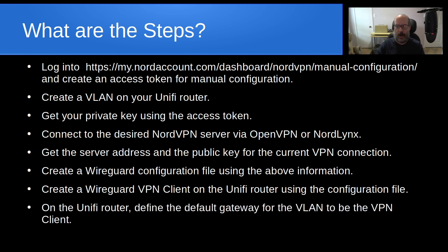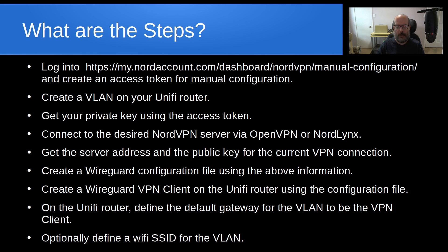We're going to create a WireGuard VPN client on the UniFi router using that configuration file, and define the default gateway for the VLAN to be that VPN client. Optionally, we'll define a Wi-Fi SSID for the VLAN. The reason for that is things like set-top boxes — Fire TV sticks or Rokus — where maybe you don't want to run a VPN client on the device itself, but you want to geolocate it to another part of the world to watch content from there. You can just join this Wi-Fi network to accomplish that.